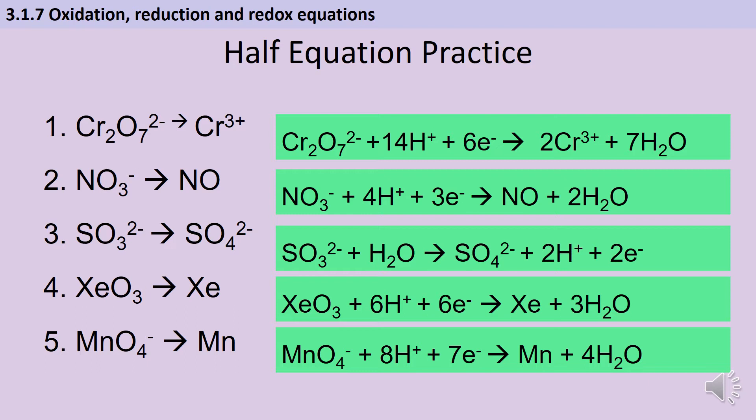In question number two we've got nitrogen five being reduced to nitrogen two which requires three electrons, four hydrogen ions and produces two molecules of water.